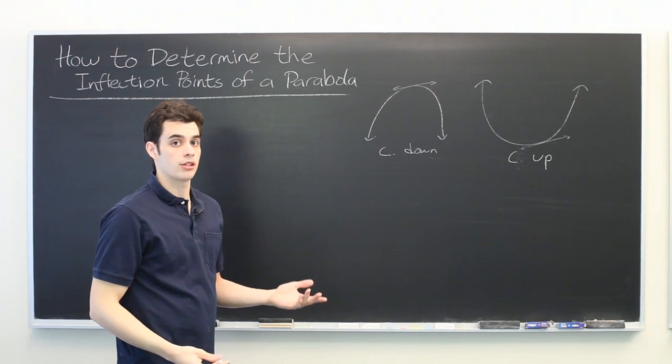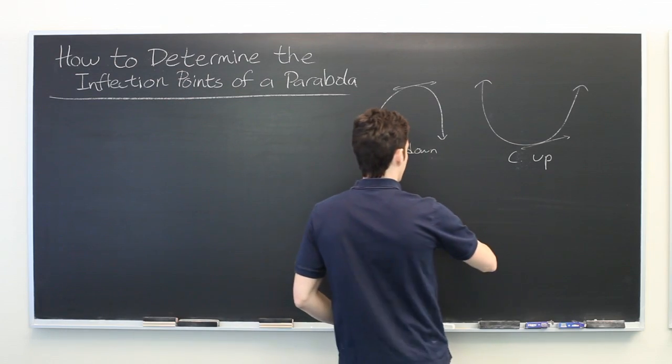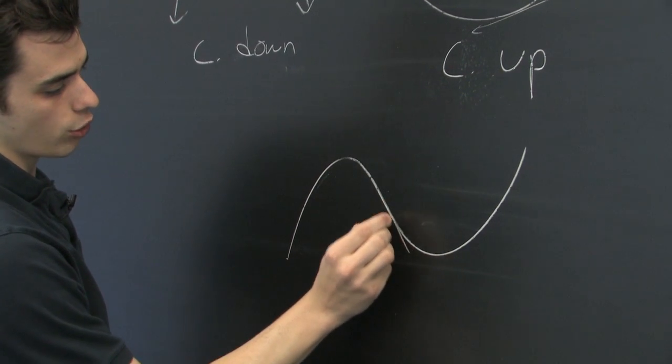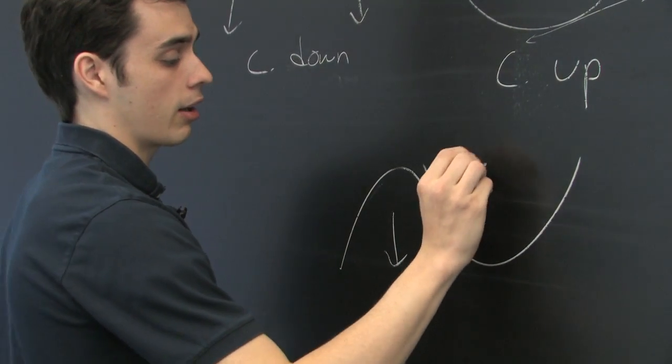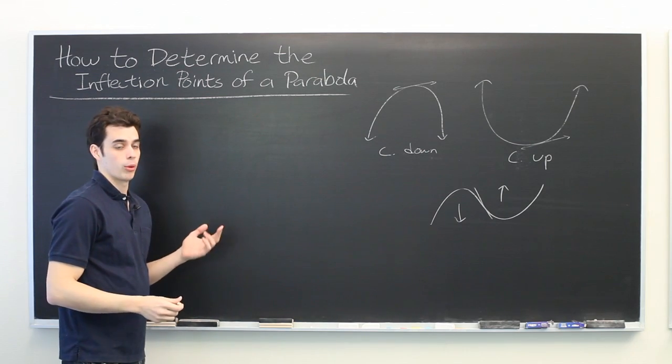An inflection point is a point at which the concavity of a graph changes. So for example, right here we have an inflection point where it changes from concave down to concave up. And our question is how do we determine the inflection points of a parabola?